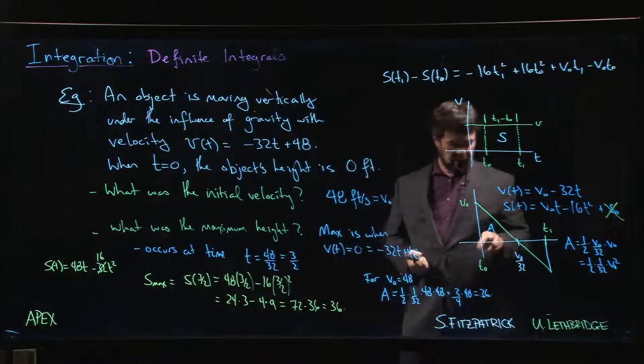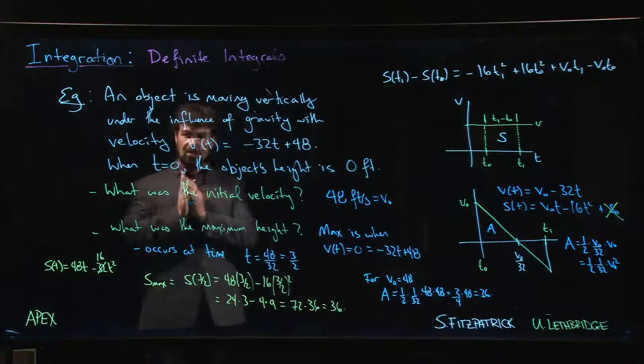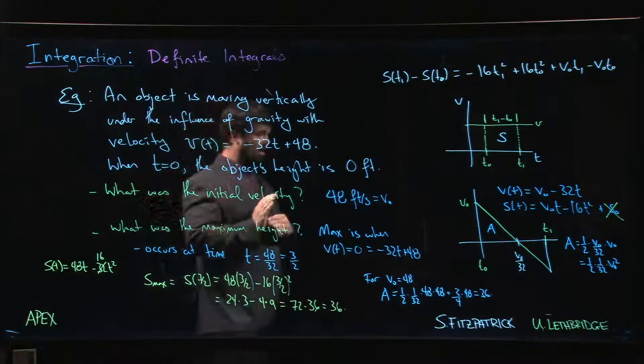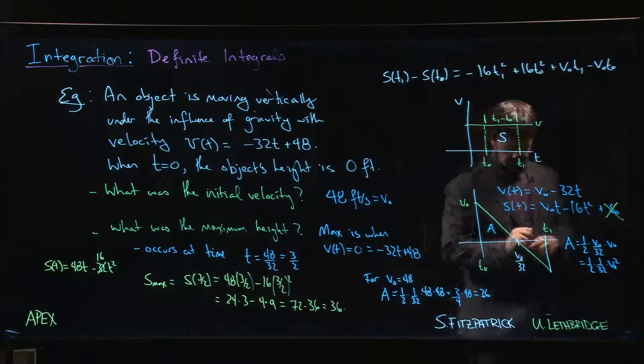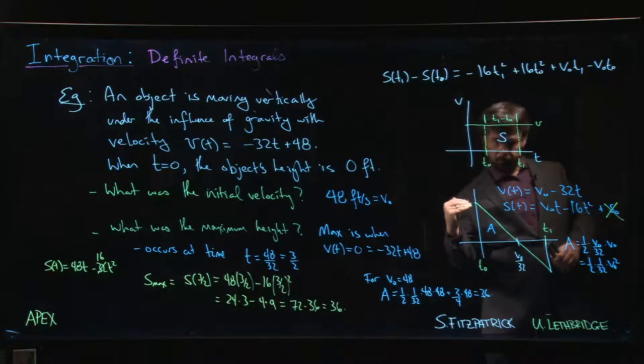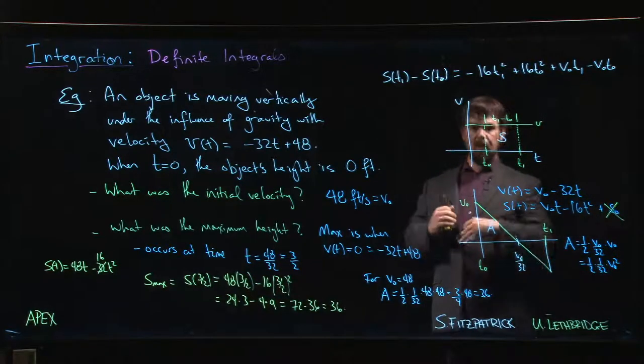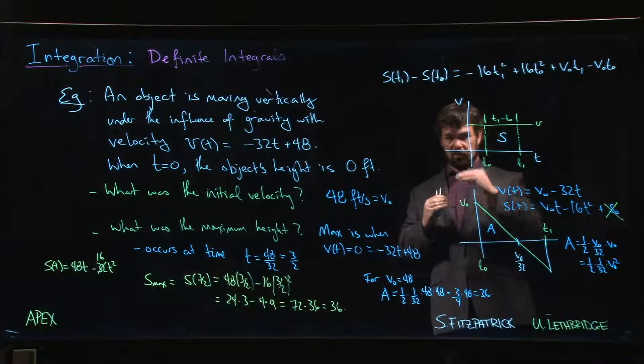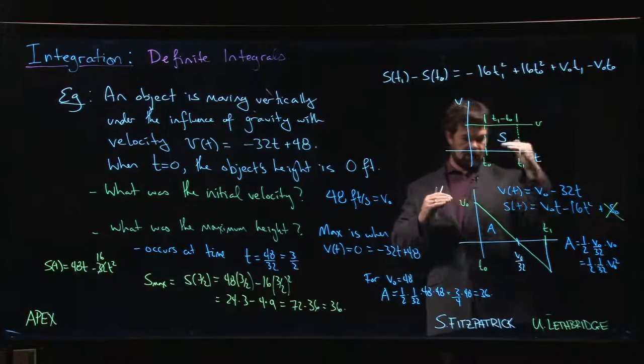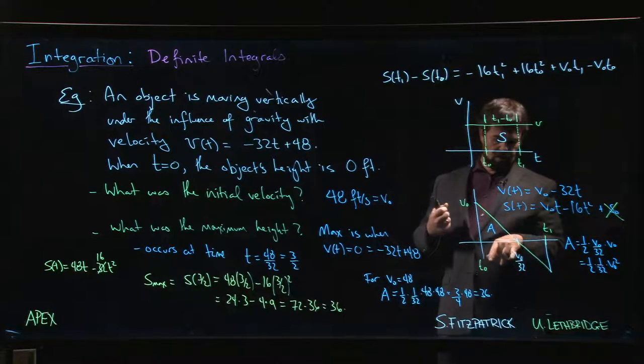You'll notice the area of this triangle is exactly that displacement from time zero until we hit the maximum. If you let time continue to run, velocity becomes negative as the ball starts coming back down. The total displacement, the difference between initial and final positions, is now going to be less than that maximum because it's coming back down.